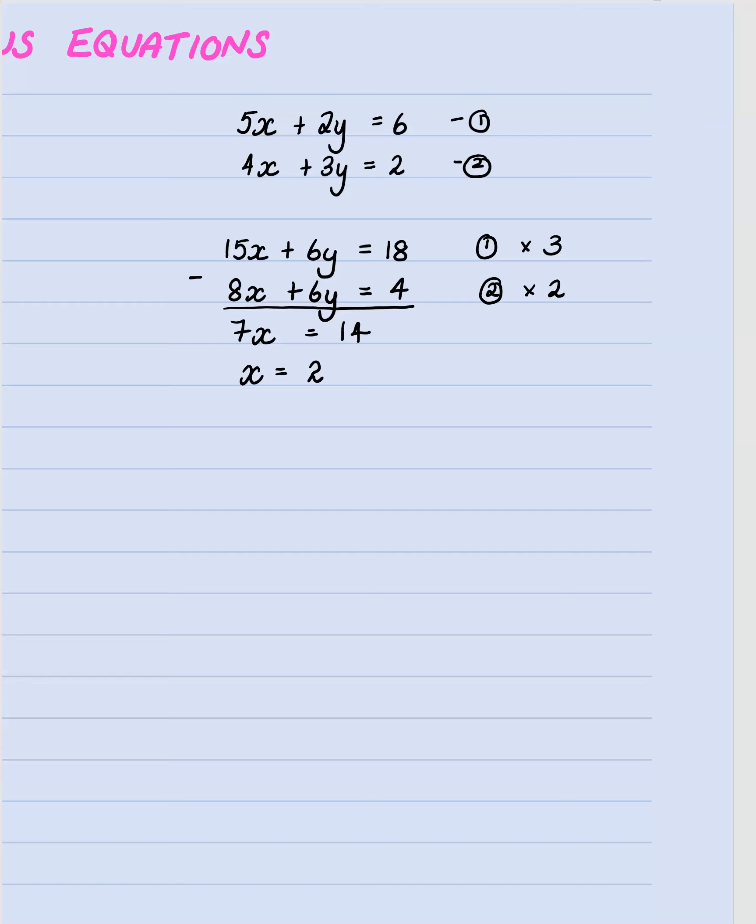And we finish it off. It's going to be a little bit more irritating. Which one are we going to put the two back into. Well both are annoying. I'll just go with the top one. That becomes 5 times 2 is 10 plus 2y equals 6. So 2y equals 6 take 10 and we end up with 2y equals negative 4 and y equals minus 2. And those are my solutions.